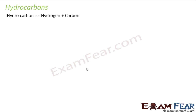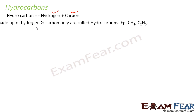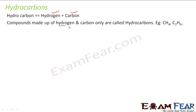Hydrocarbons. As the name suggests, hydrocarbon is nothing but hydrogen plus carbon. Compounds made of hydrogen and carbon only are called hydrocarbons. For example, CH4 methane, C2H6 ethane — all these are examples of hydrocarbons.